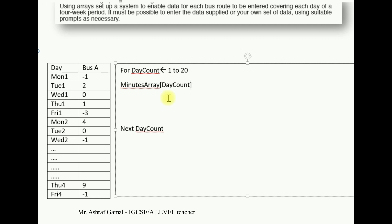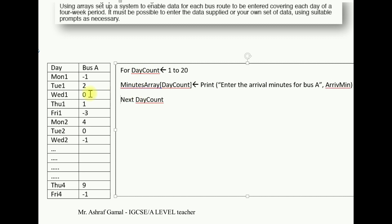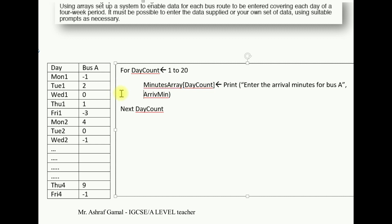Inside the loop, we show a message to the user, for example: 'Enter the arrival minute for bus A.' The variable will be called ArriveMinute. Before all of this, we need to declare all the variables — the data structure array named MinutesArray, and also the variable ArriveMinute as integer, since the data values are whole numbers only.